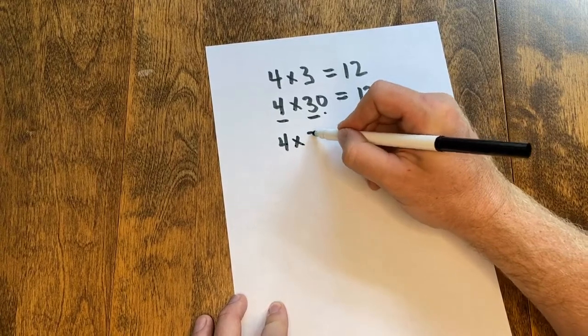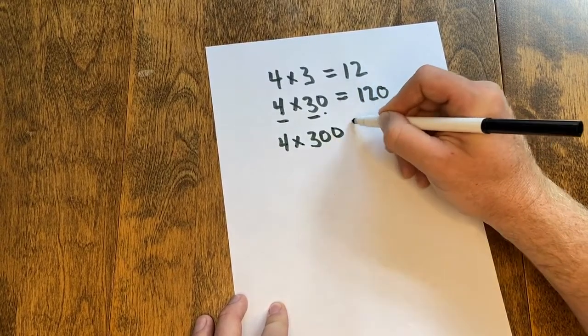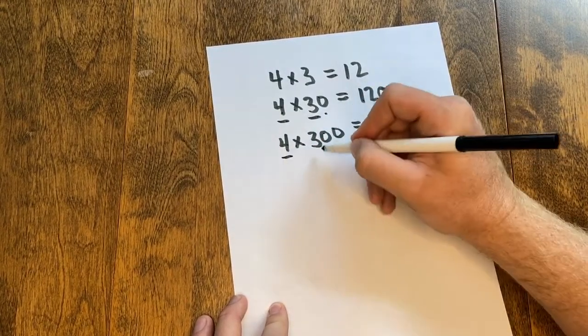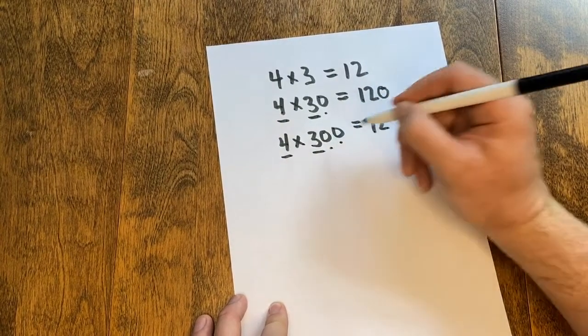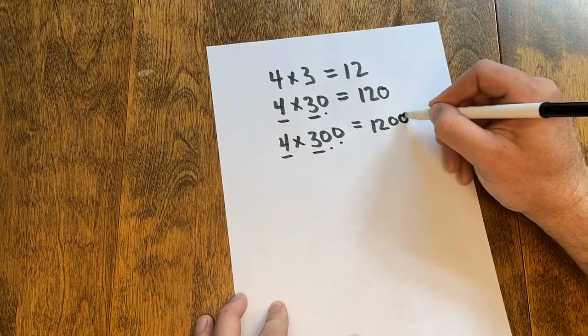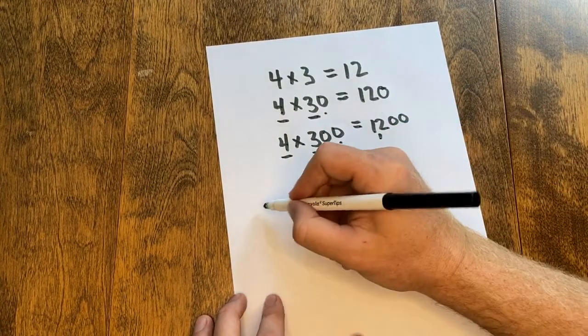We can use that same strategy, 4 times 300. Again, we do 4 times 3 is 12. We count the zeros in the factors, there's 1, 2. We add that to our product, so our answer is 1,200.